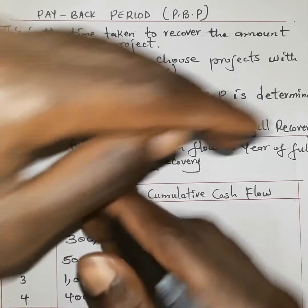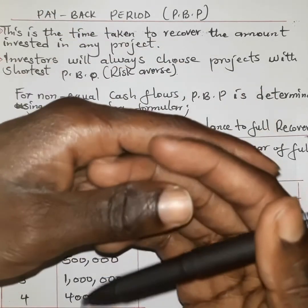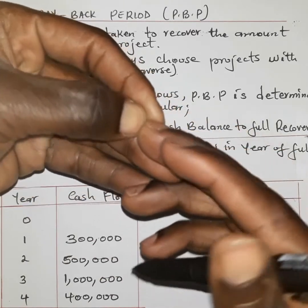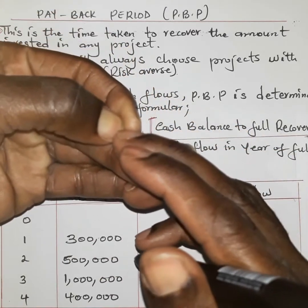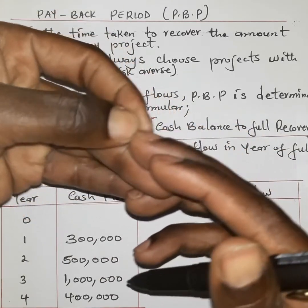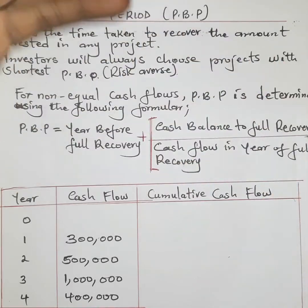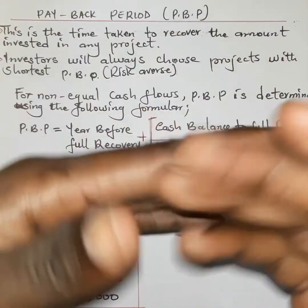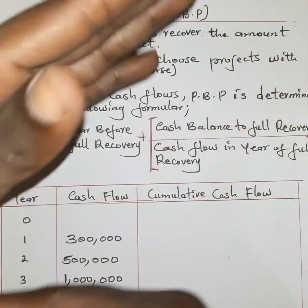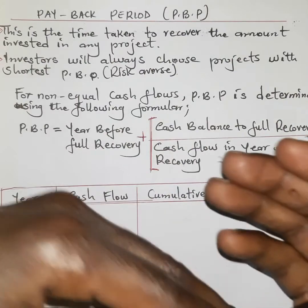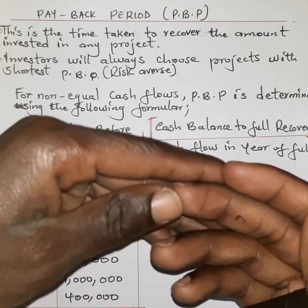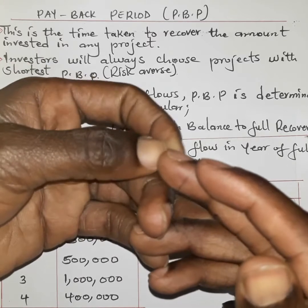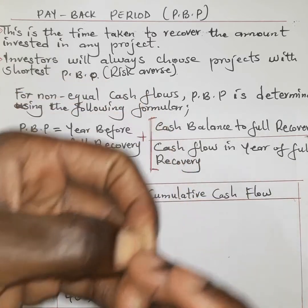Risk-averse investors prefer short payback periods because of the many risk factors, including systematic risk. For example, COVID-19 is affecting most financial transactions. They always want their returns as short as possible so they can embark on other investment avenues.